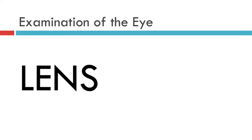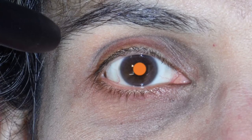The function of the lens is to act as a transparent refractive surface. As non-specialists, we just need to prove that the lens is transparent and does not have any opacity or cataract. For this you will need your ophthalmoscope, but you do not need to use it to visualize the retina. If you hold the ophthalmoscope aperture up hard against your eye and turn on the light, direct the light towards the patient's eye, you will probably see a glow in the patient's pupil. This is the red reflex.